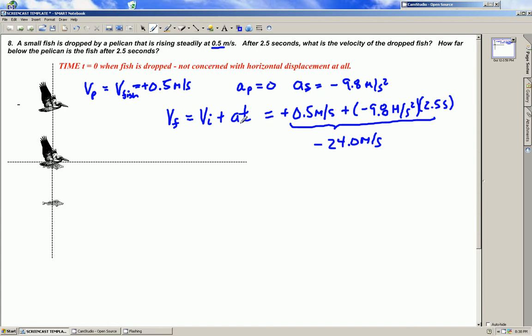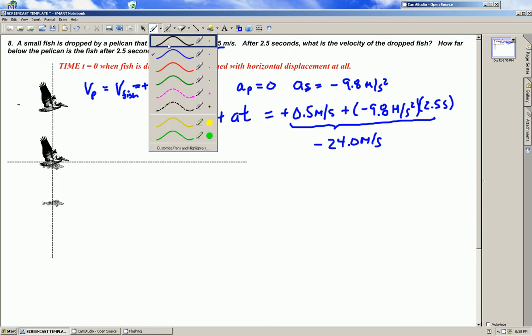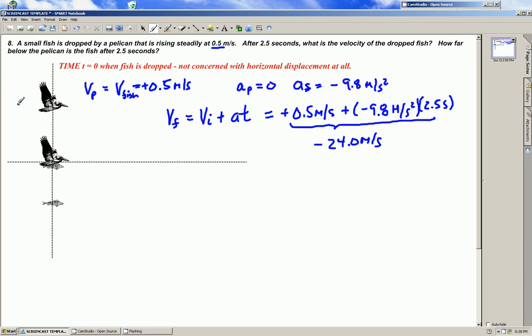Second part of the question asks how far below the pelican is the fish after 2.5 seconds. So what we're looking for here is this entire distance because the pelican moves up in that 2.5 seconds while the fish moves down.